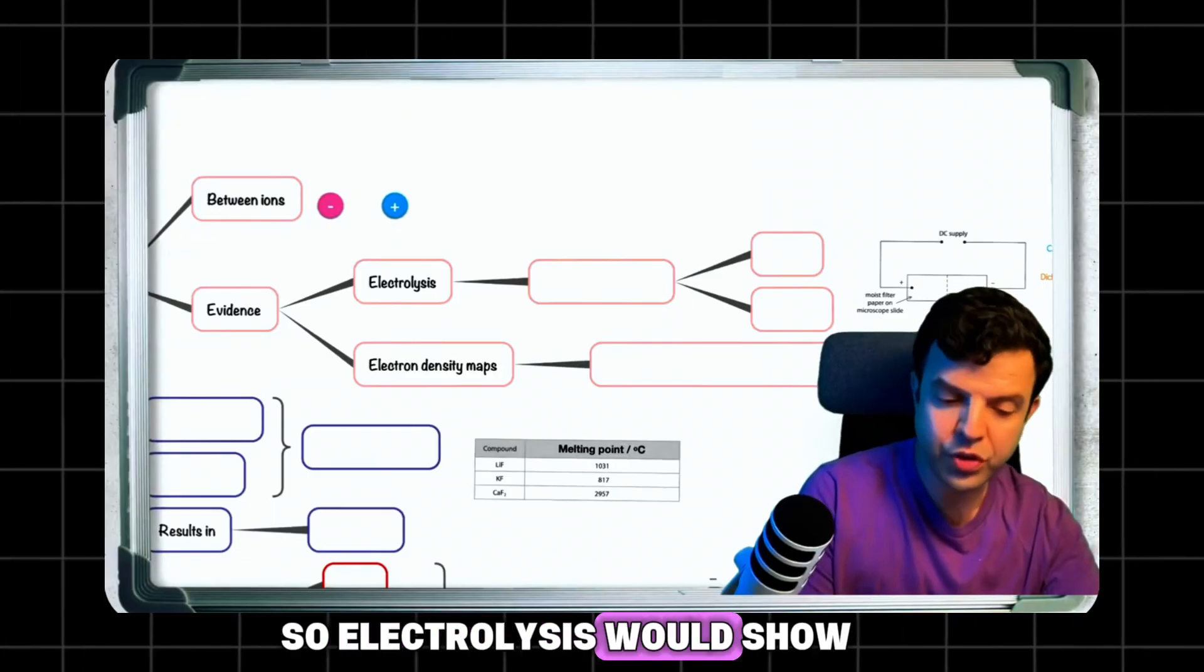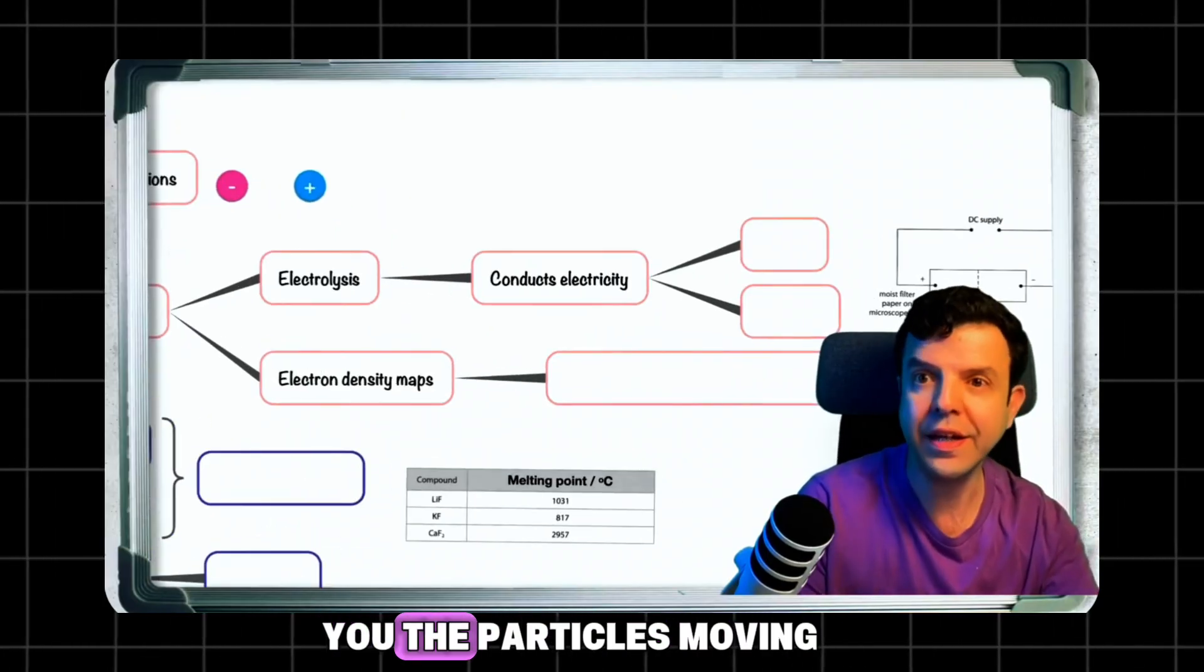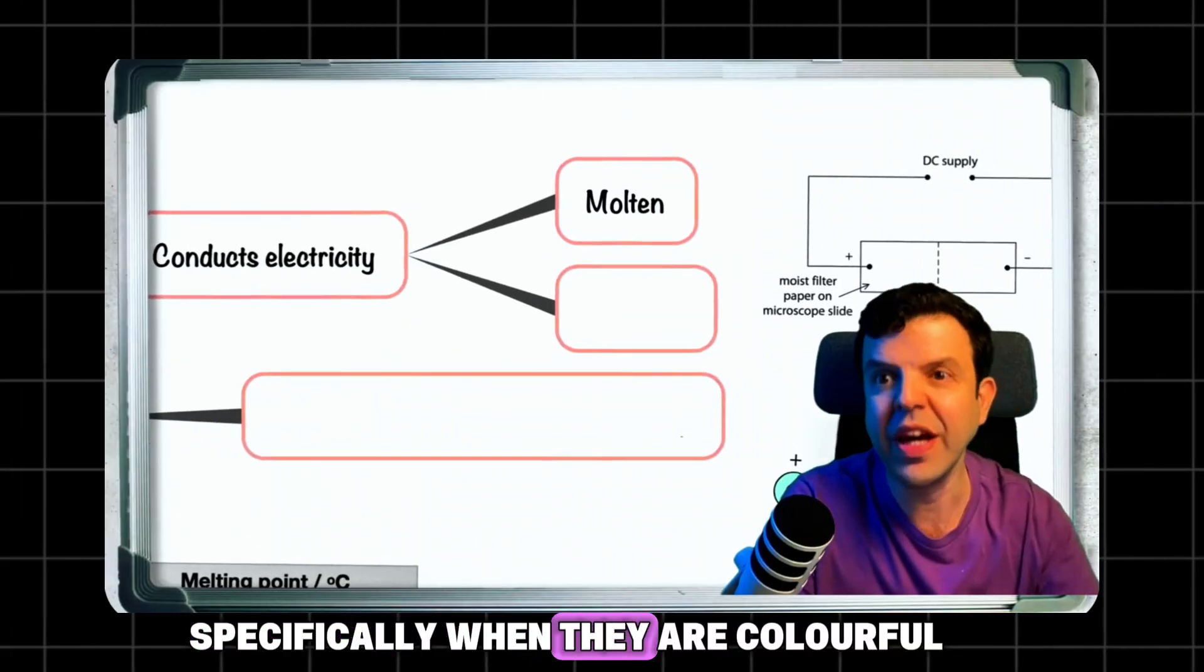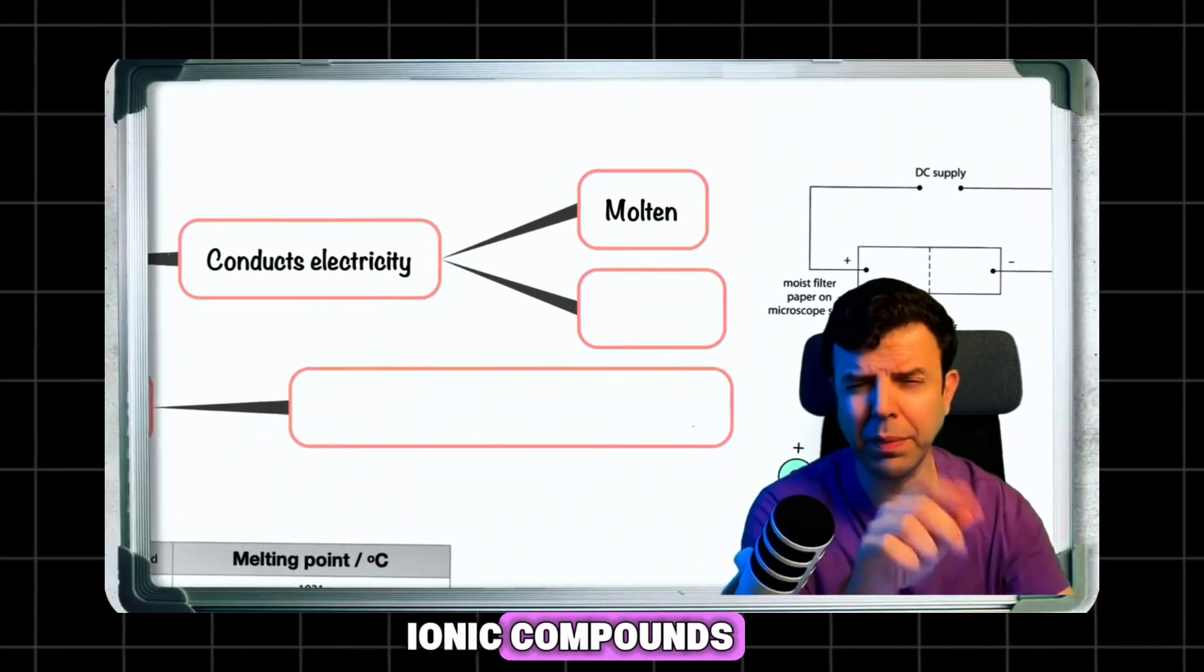So electrolysis shows you the particles moving, specifically when they are colorful. By the way, ionic compounds